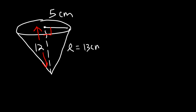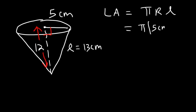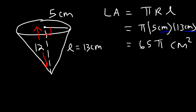Now that we have l, we can find the lateral area: π times r times l. That's π times 5 cm times 13 cm. 5 times 13 is 65. Area is measured in square units, so the lateral area is 65π square centimeters.